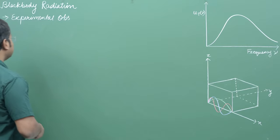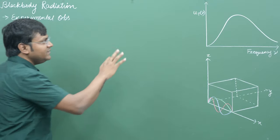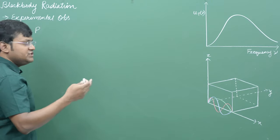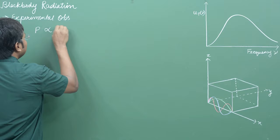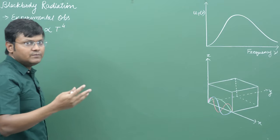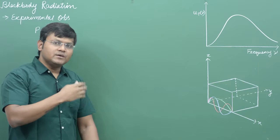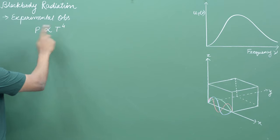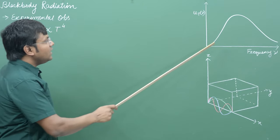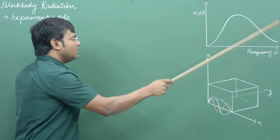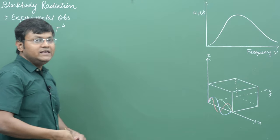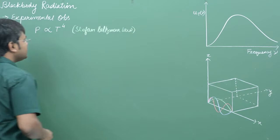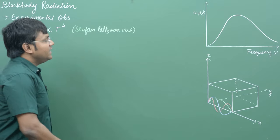If you calculate the area under this curve you get the power emitted by a black body, which turns out to be directly proportional to the fourth power of temperature. So with increasing temperature the graph becomes larger and larger, and the area keeps increasing. This is known as the Stefan-Boltzmann law.